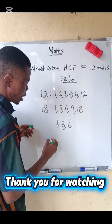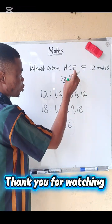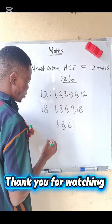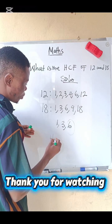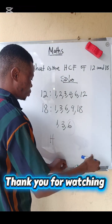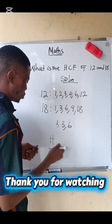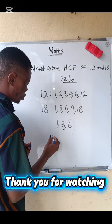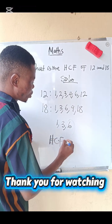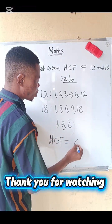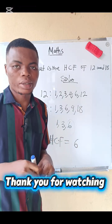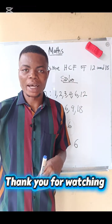So the highest common factor between 12 and 18 equals six. The answer is six. Bye bye.